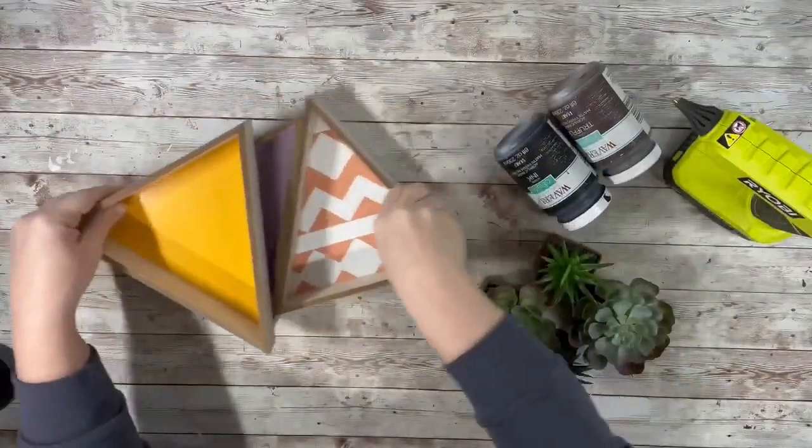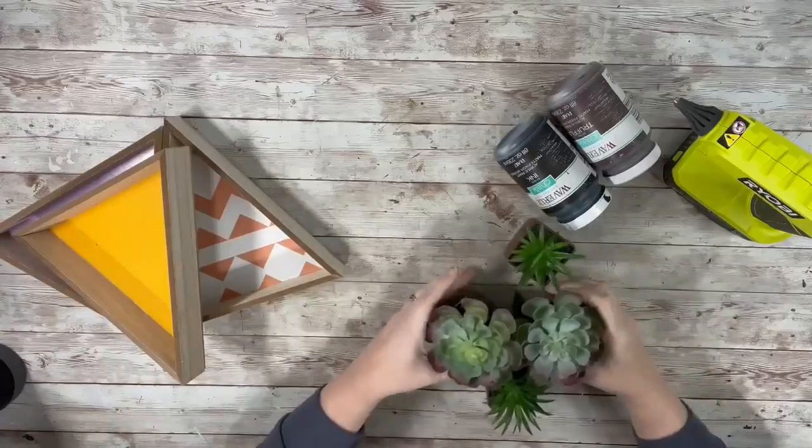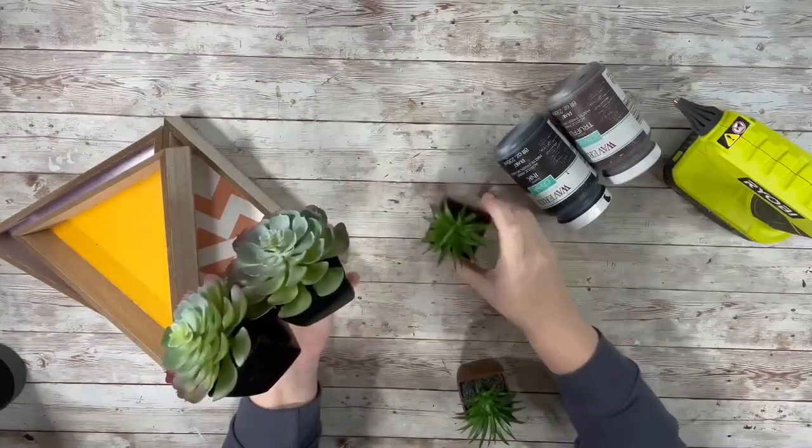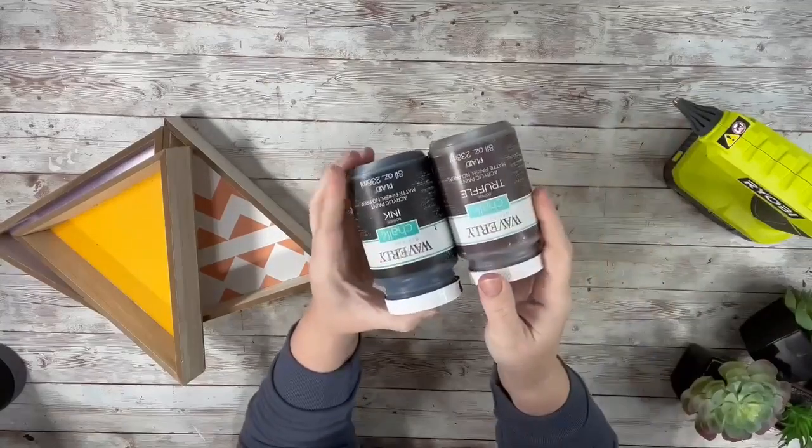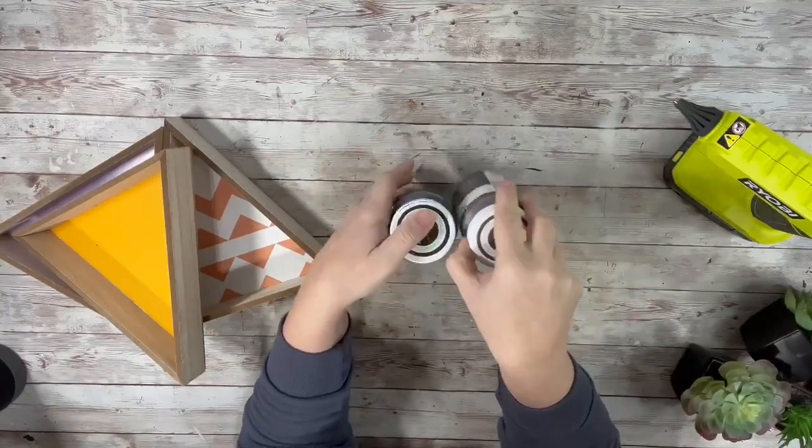I used three of these triangle boxes from Dollar Tree, some of their succulents, some chalk paint in the color truffle and ink, and hot glue.